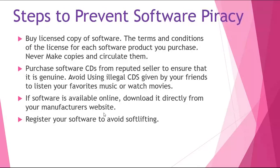Steps to prevent software piracy: Buy a licensed copy of software and follow the terms and conditions of the license. Never make copies and circulate them. Purchase software CDs from a reputed seller and ensure it is genuine. Avoid using illegal CDs given by friends. If software is available online, download it directly from the manufacturer's website. Register your software to avoid soft lifting.